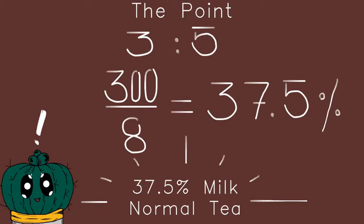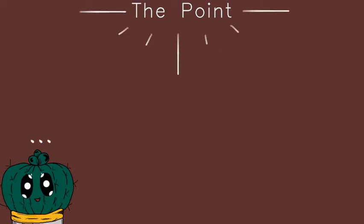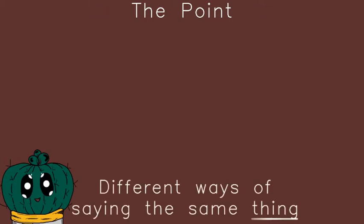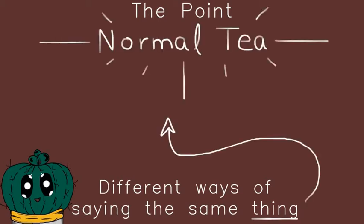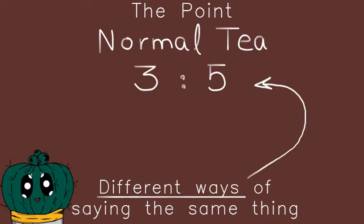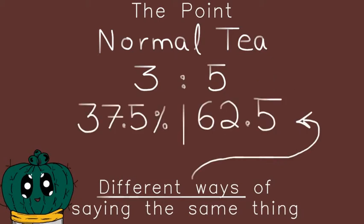This tells us there is 37.5% milk in your normal tea. You can use different ways of saying the same thing. Normal tea consists of three parts milk to every five parts water, or you can say 37.5% of the tea is milk and 62.5% is water.